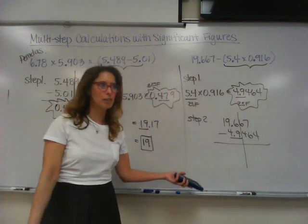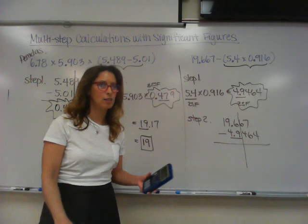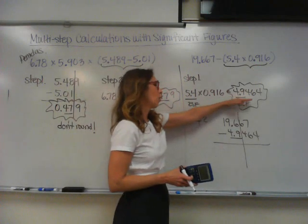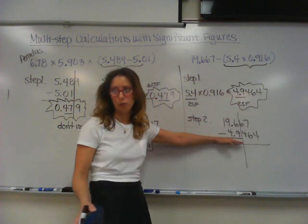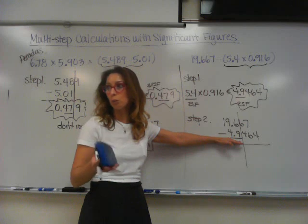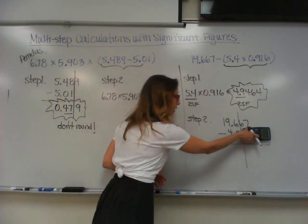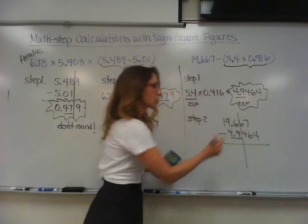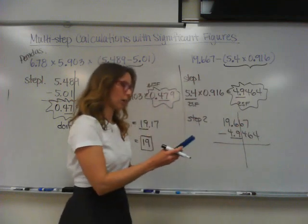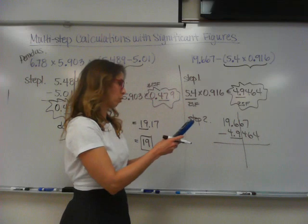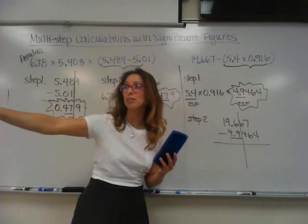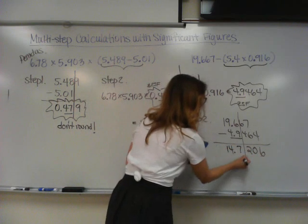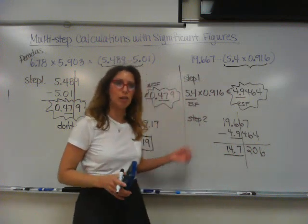Does that make sense to everybody? Since this term only had two sig figs, once I go to the subtraction step you line up your decimals. Now you look for the term with the fewest decimal places — technically this one only goes to the tenth place. We just used the entire number because we weren't done. So now you're going to draw your line just after it. 19.667 minus 4.9464 is 14.7206. Underline the 14.7, because those are the digits to the left of the line.